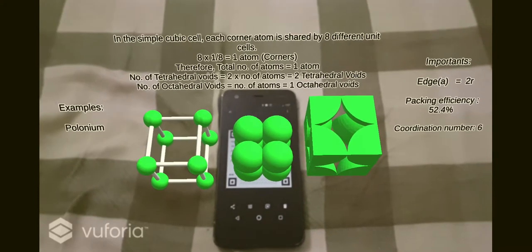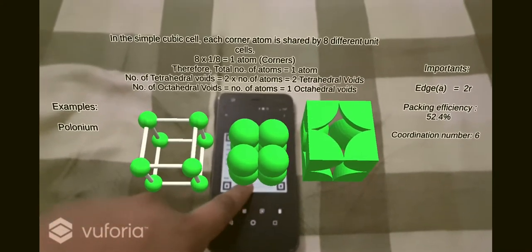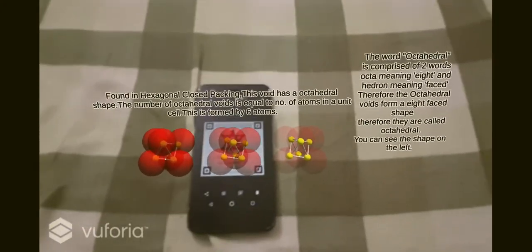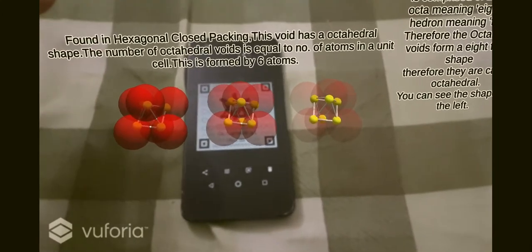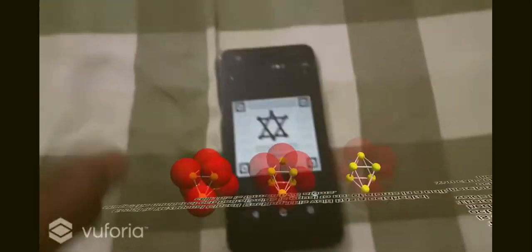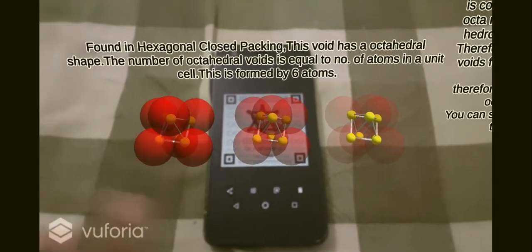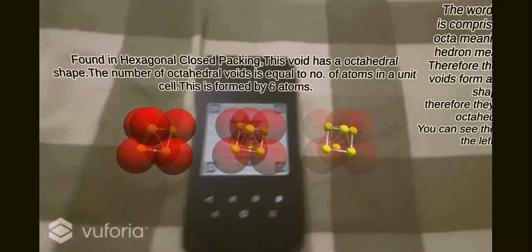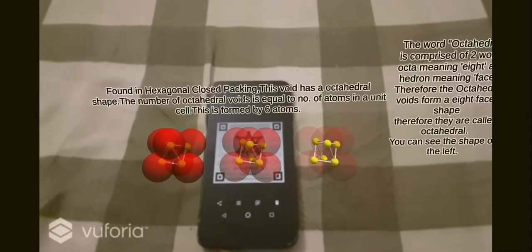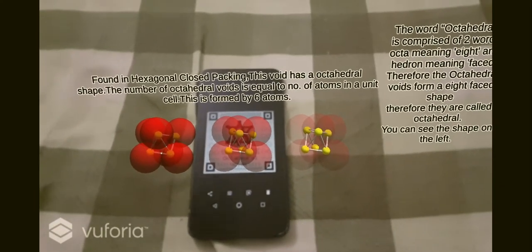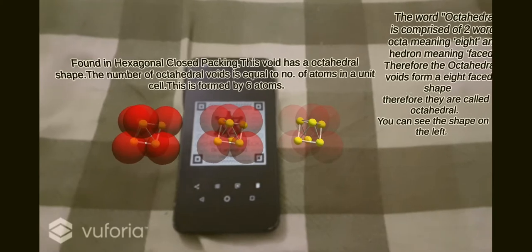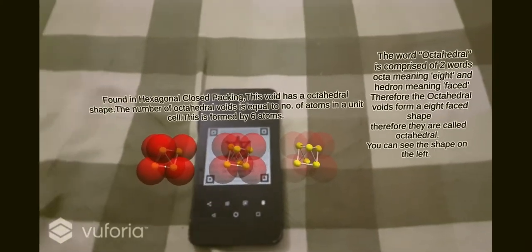This is the octahedral void found in the hexagonal close packing system. You might have seen three spheres above and three inverted spheres below. When you look at it from this side, you can see exactly why. The spheres are in transition and you can see the shape - that is how exactly it looks. That is an octahedron, an eight-faced figure. It's just like two square pyramids joined by the base. You can quite easily get the idea if you see this.